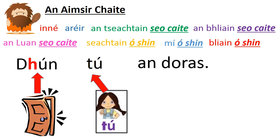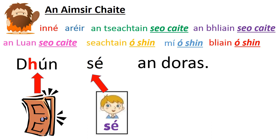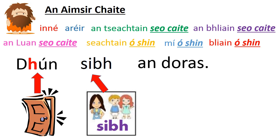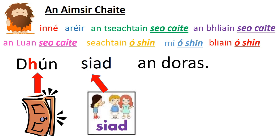Dhún mé an doras — I closed the door. Dhún tú an doras — you closed the door. Dhún sé an doras — he closed the door. Dhún sí an doras — she closed the door. Dhún sibh an doras — that's you plural. If you were a country person you'd say 'ye closed the door,' and if you were a very Dublin person you might say 'yiz closed the door.' It's when you're talking to more than one person. Dhún siad an doras — they closed the door.